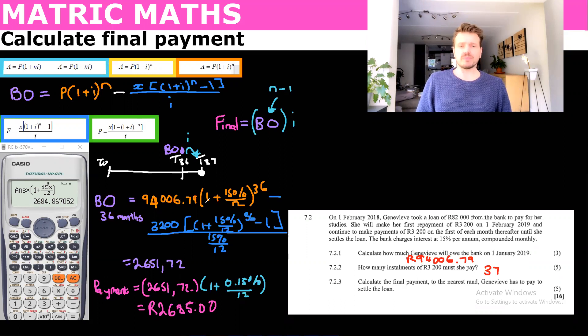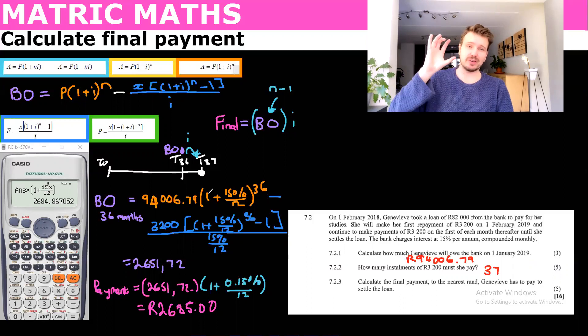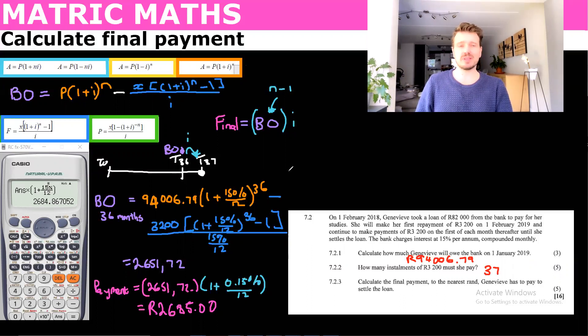So that's the balance outstanding of the loan. In the next video, I'm going to do one more video on finance with the investments before doing the effective interest, which might come up. And that's something that they don't give you a formula for. So we have to remember it. So subscribe so that you get notifications on all these matric maths videos, and I will see you in the next lesson. Bye.